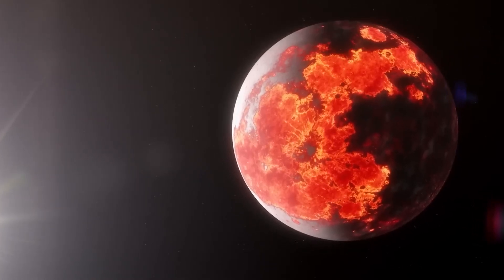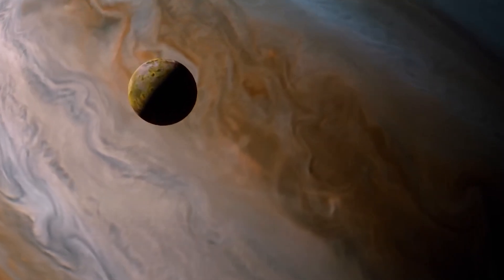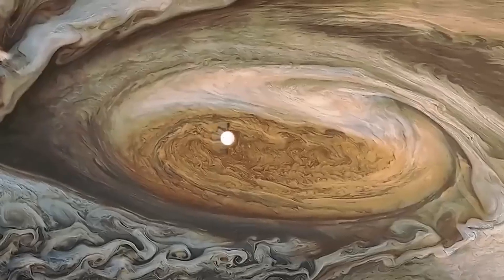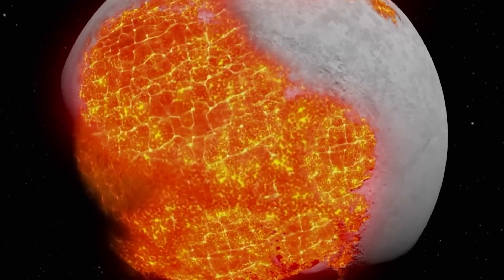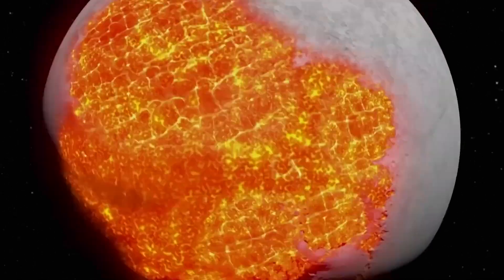However, the revelation of active volcanoes on Io, Jupiter's moon, slightly larger than Earth's, marked a pivotal moment, establishing Io as the most volcanically active body in the solar system.